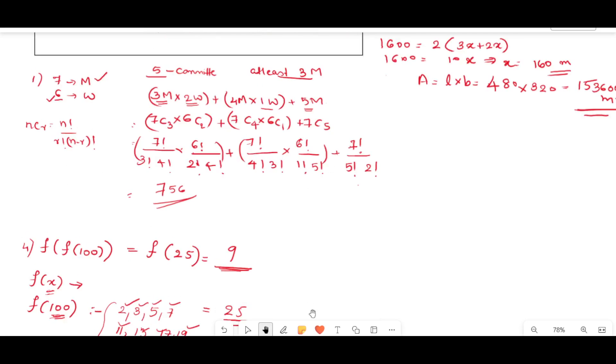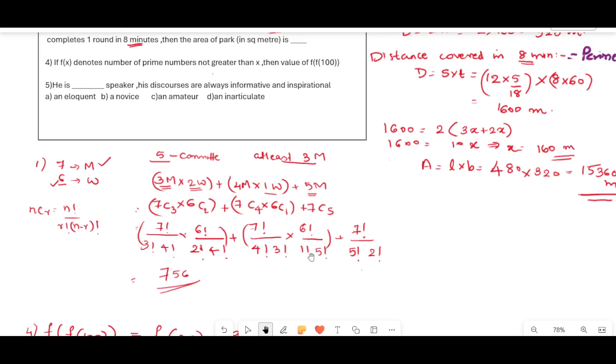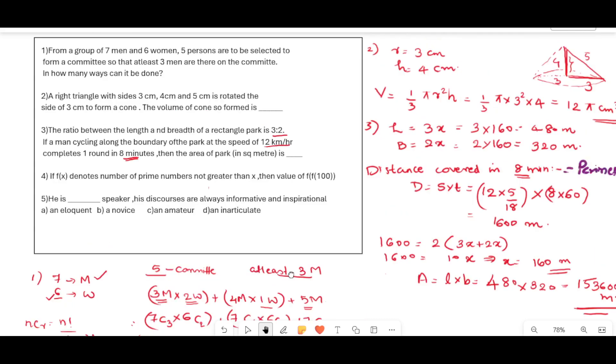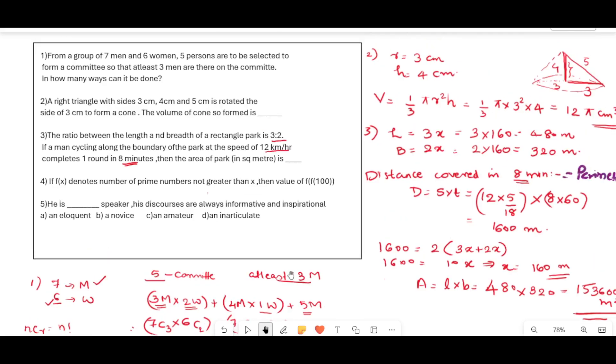Now we will move to the last question. He is dash speaker. His discourses are always informative and inspirational. Options are: an eloquent, a novice, an amateur, and an inarticulate. In the second clause it says that his speech is informative and inspirational.